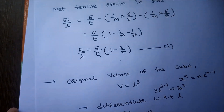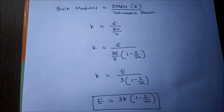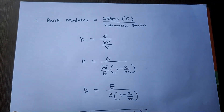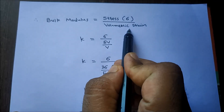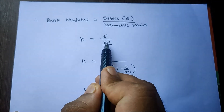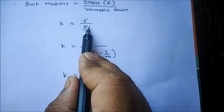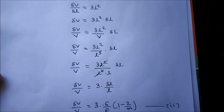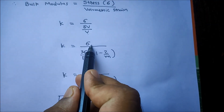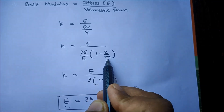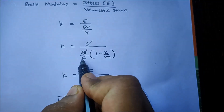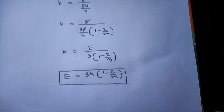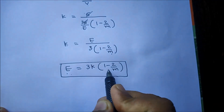Bulk Modulus K is the ratio of direct stress to the corresponding volumetric strain. So K equals sigma divided by delta V by V. Substituting delta V by V from equation 2, which is 3 sigma by E times (1 minus 2/m): K equals sigma divided by [3 sigma by E times (1 minus 2/m)]. Sigma cancels out. So K equals E divided by [3(1 minus 2/m)]. Rewriting: E equals 3K multiplied by (1 minus 2/m). This is the relation between Young's Modulus, Bulk Modulus, and Poisson's Ratio.